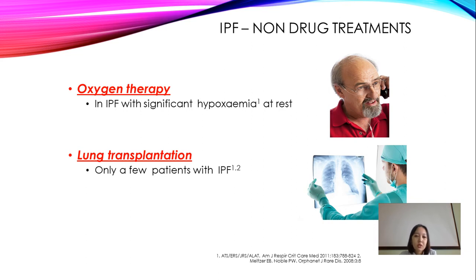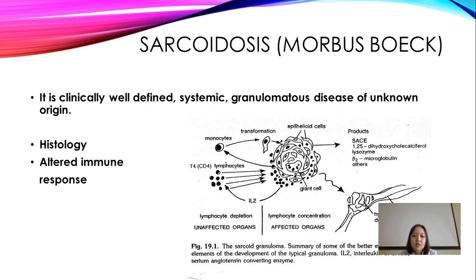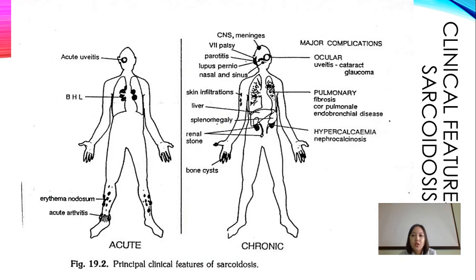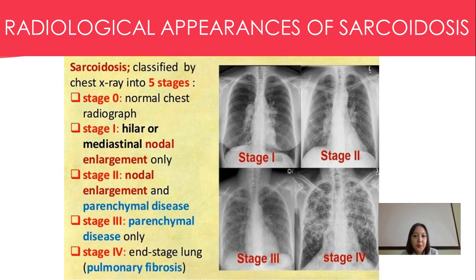The next disease is sarcoidosis — a clinically well-defined systemic granulomatous disease of unknown origin. It requires histology and altered immune response to develop. Sarcoidosis presents with various symptoms and comes in two types: acute and chronic.